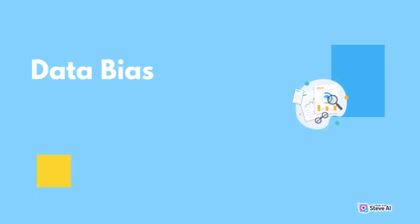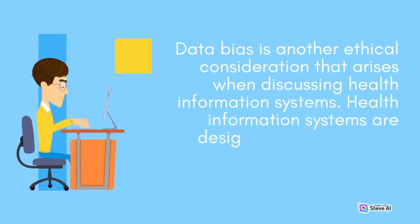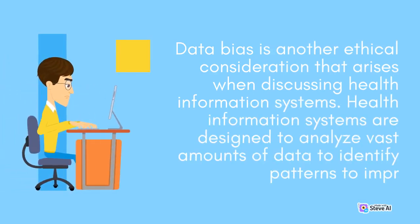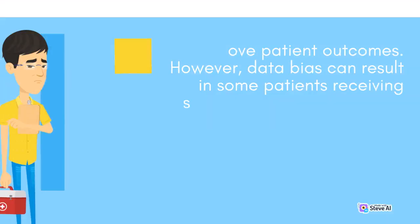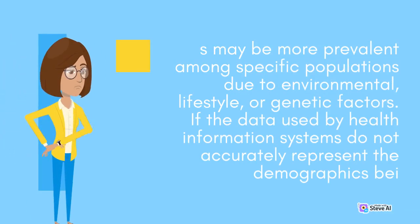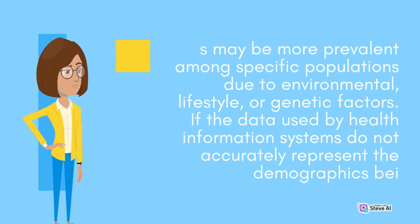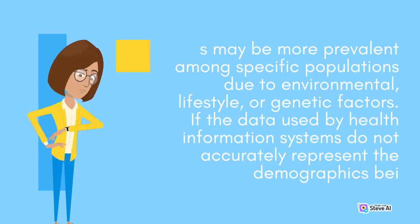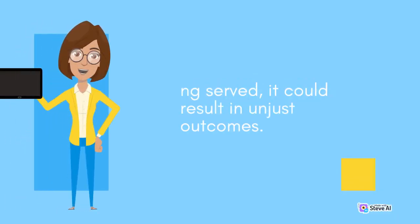Data Bias. Data bias is another ethical consideration that arises when discussing health information systems. Health information systems are designed to analyze vast amounts of data to identify patterns to improve patient outcomes. However, data bias can result in some patients receiving suboptimal care because of factors such as gender, race, or socioeconomic status. Certain health conditions may be more prevalent among specific populations due to environmental, lifestyle, or genetic factors. If the data used by health information systems do not accurately represent the demographics being served, it could result in unjust outcomes.